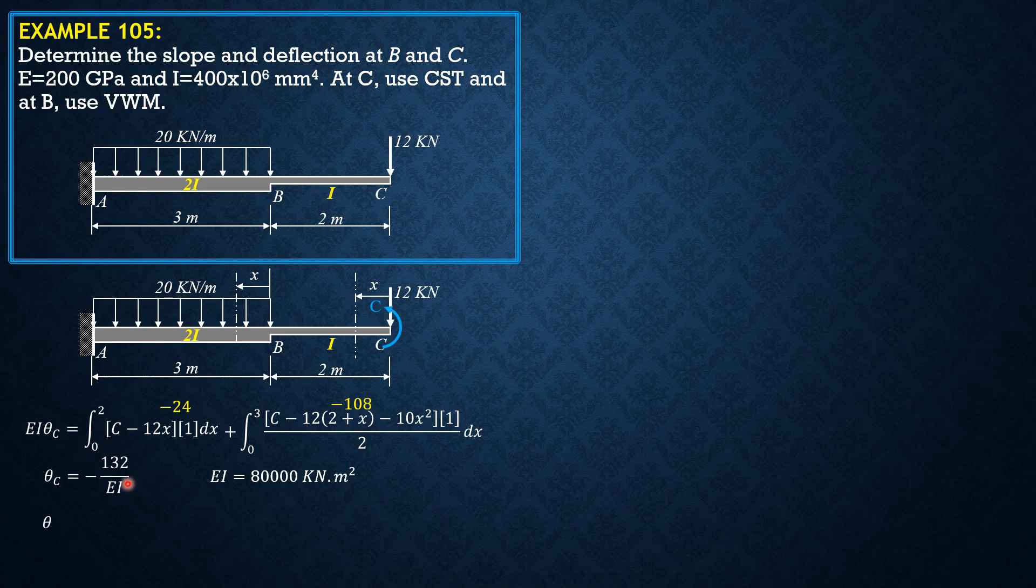So we divide this by 80,000, theta C is negative 132 over 80,000, which equals negative 1.65 times 10 to the negative 3 radians.